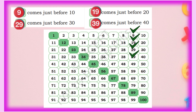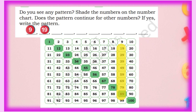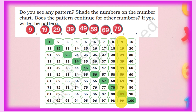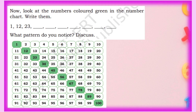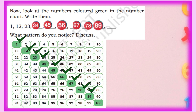Now look at the numbers coloured green in the number chart and write them: 1, 12, 23, 34, 45, 56, 67, 78, 89, 100. Notice the pattern — the last digit of one number becomes the first digit of the next: 34 ends in 4, and 45 starts with 4; 45 ends in 5, and 56 starts with 5. This is a diagonal pattern on the number chart.